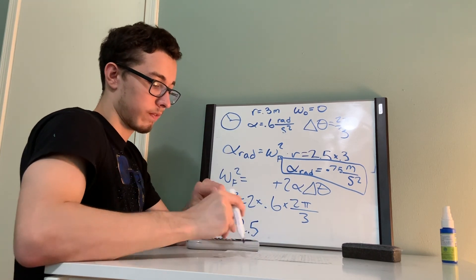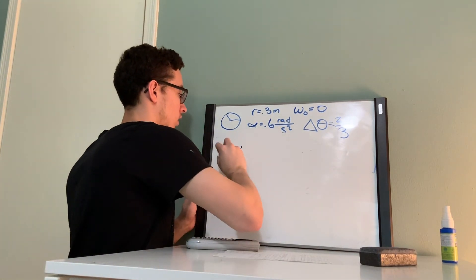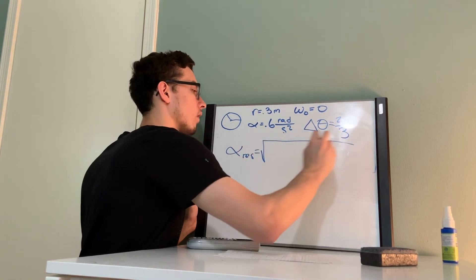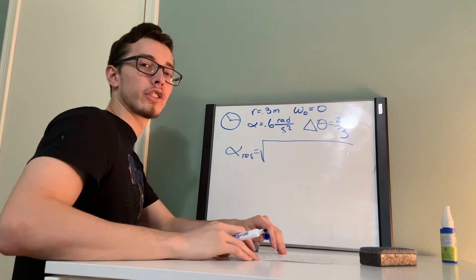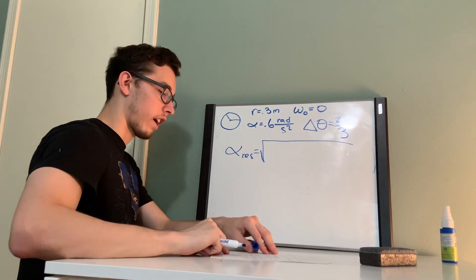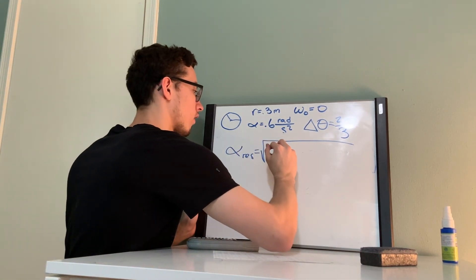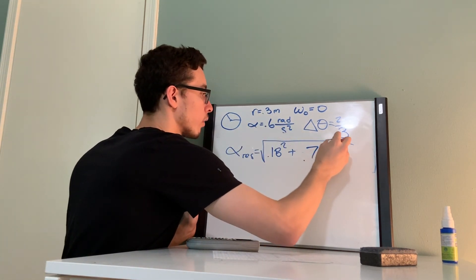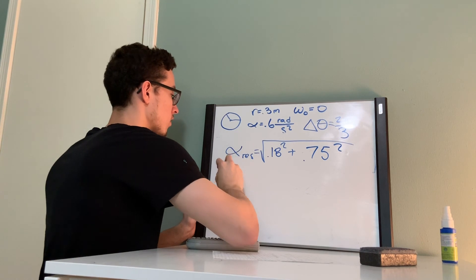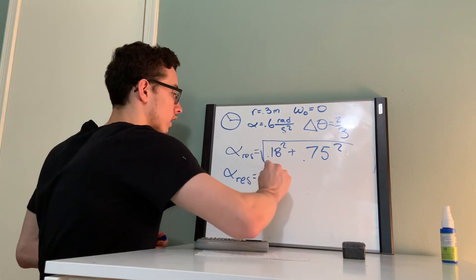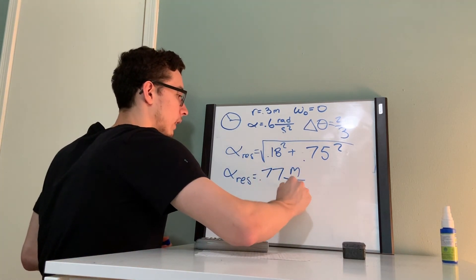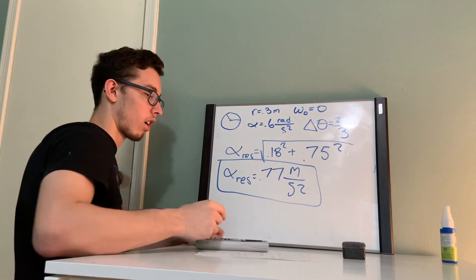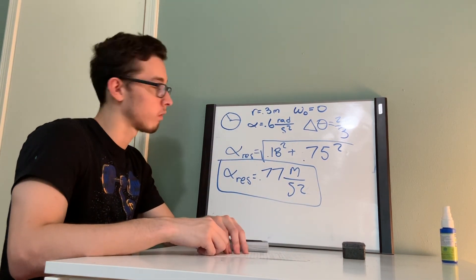Lastly, our resultant vector is the square root of the sum of our other vectors squared: the square root of 0.18 squared plus 0.75 squared. We get 0.77 meters per second squared. And that's how you do this problem. If you need more help, let me know. I'll see you next time.